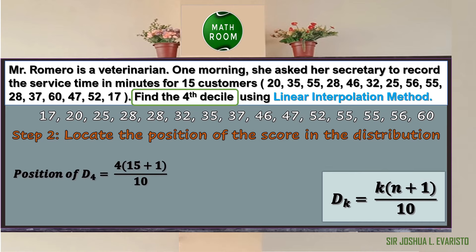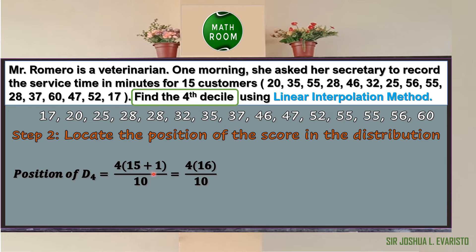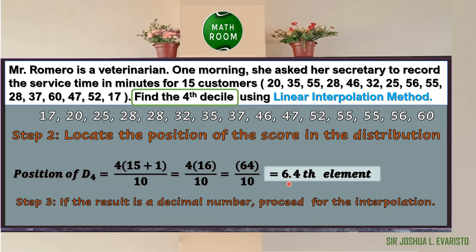The position of D sub 4 = 4 × (15 + 1) / 10, since k = 4 and n = 15. Computing: 15 + 1 = 16, 16 × 4 = 64, 64 ÷ 10 = 6.4. So the position of the 4th decile is the 6.4th data element. Step 3: since the result is a decimal number, interpolation is needed.